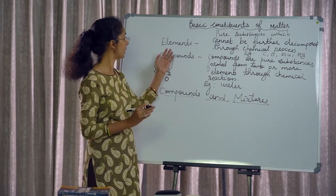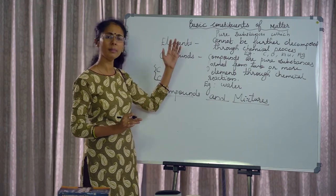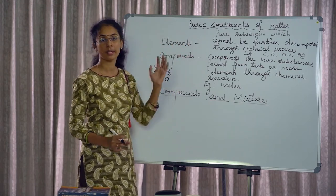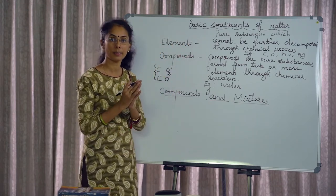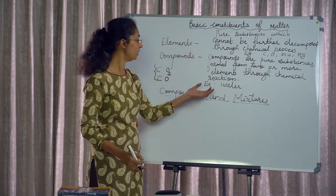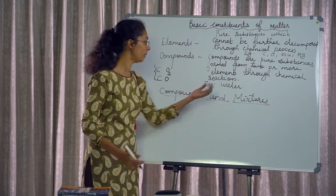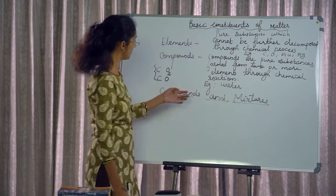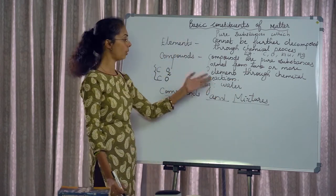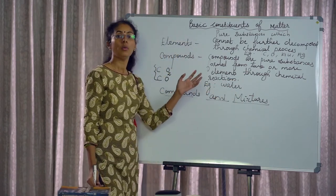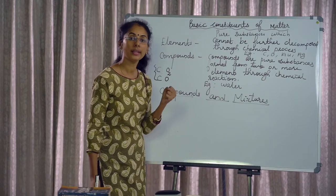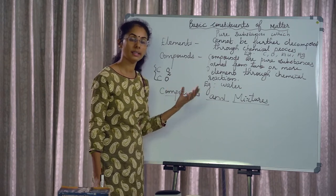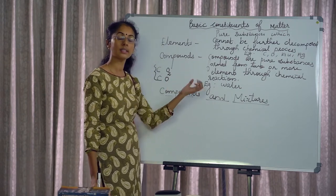In the case of chemical compounds, we can separate them. For example, we have water. Water can be separated using electricity — that is electrolysis, passing electricity through it.